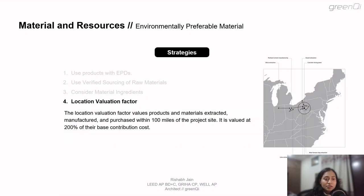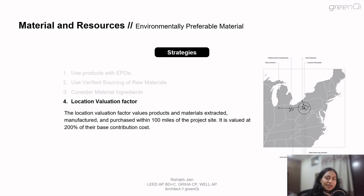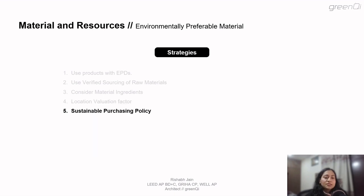The last strategy is the location valuation factor, which plays an important role across all three material disclosure credits. If a product is sourced within 100 miles of the project site, it is valued at 2x its actual valuation — so one product would be counted as the equivalent of two products in the calculations. It's not something that will come up as a calculation in the exam, but it's important to understand that sourcing within 100 miles is given preference when selecting products.